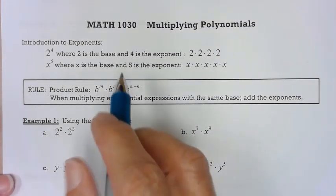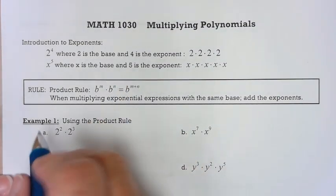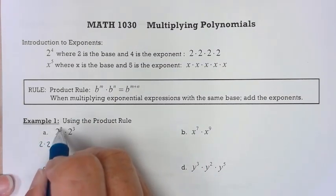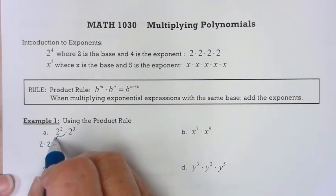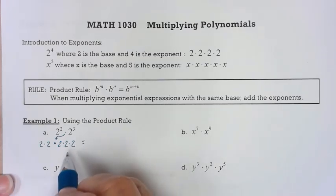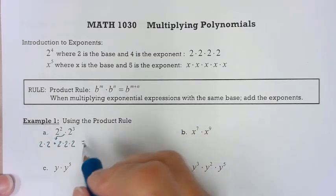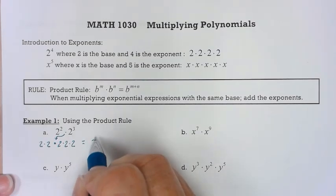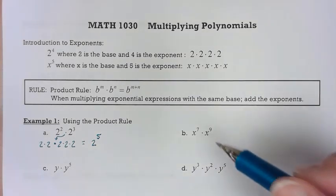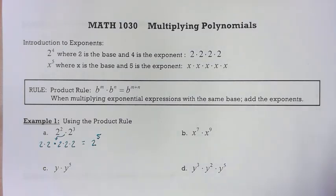I'm going to write this out first in expanded form so we can see why that rule works. So 2 squared times 2 to the third — if I rewrite that in exponential form, my base is 2, and it's raised to the fifth power. That's where the formula comes from. I'd like you to pause this video and do problems b, c, and d, and see if you come up with what I do.